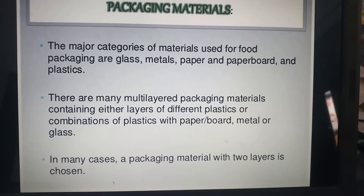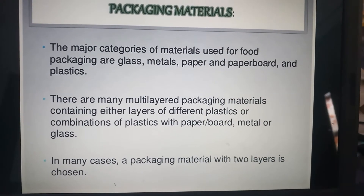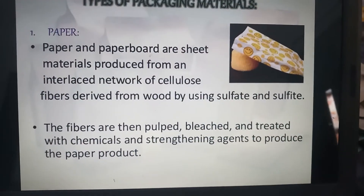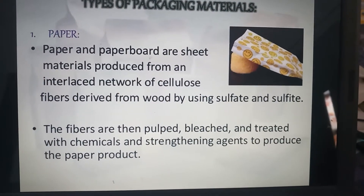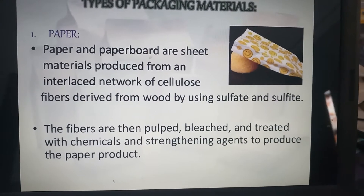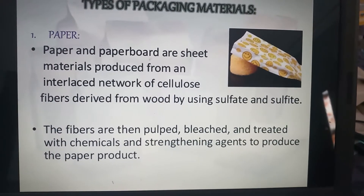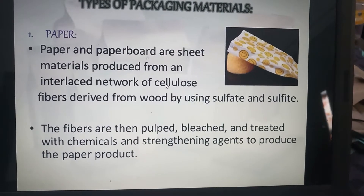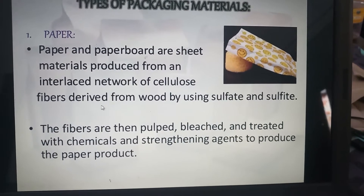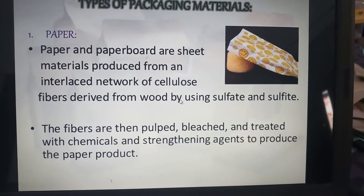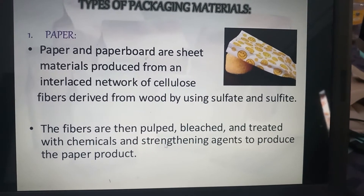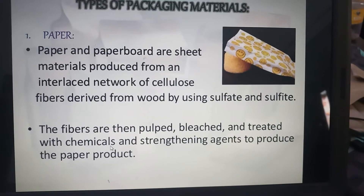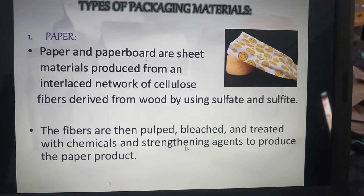First of all, paper. Paper and paperboard is a sheet material which is produced from an interlaced network of cellulose fibers derived from wood by using sulfate and sulfite processes. These fibers are then further pulped, bleached, and treated with chemicals and strengthening agents to produce the paper products.